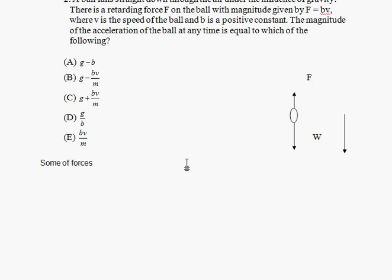Sum of forces equals MA. Sum of forces is, W is the gravitational force minus F, because F is in the negative direction. This is the positive direction. Equal MA. This is a very easy question. So we have Mg minus F is BV, equals MA. The question is for A.